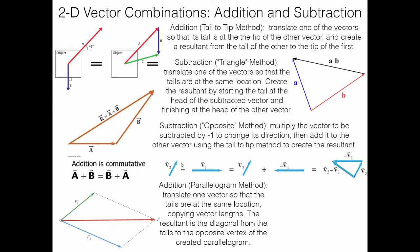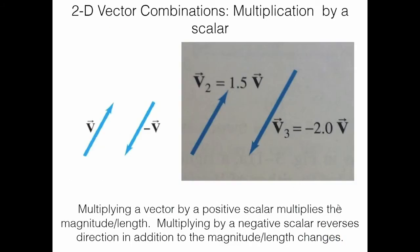There's another subtraction method: the opposite method. Multiply the vector being subtracted by −1, which switches its direction. Now you have V2 plus (−V1), and you can apply the tail-to-tip addition method. Move −V1 to start at the tip of V2, then create the resultant from the start of V2 to the tip of −V1. This gives V2 plus (−V1), or V2 minus V1. For A minus B: flip B to get −B, place it tail-to-tip, and draw the resultant from the start of A to the end of −B.